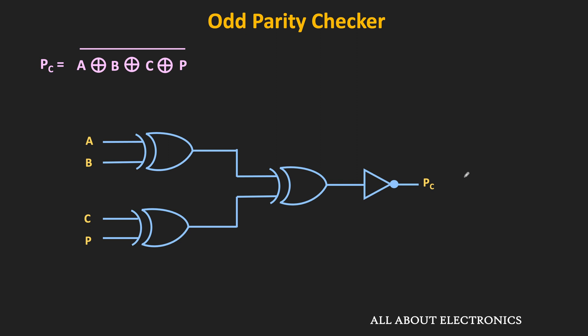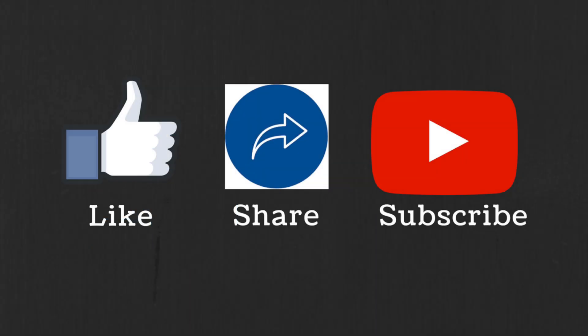If required, one can also use a readily available IC for parity generation and parity checking. The 74180 is one such IC which can be used for parity generation as well as parity checking. I hope in this video you understood how to design the parity generator and parity checker circuits. If you have any question or suggestion, let me know in the comment section below. If you like this video, hit the like button and subscribe the channel for more such videos.